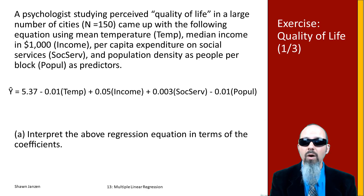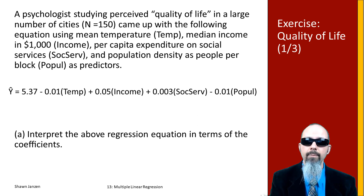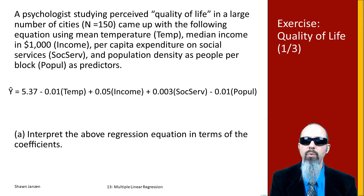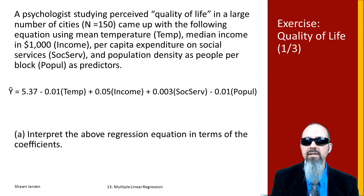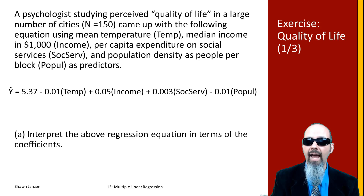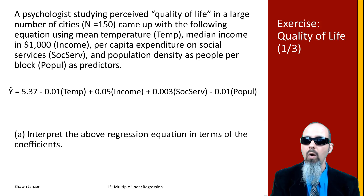Okay, let's work through these together so you can check your work. Our temperature variable has a coefficient of negative 0.01, so we can interpret that as: for each additional degree of temperature, we would expect to see an average decrease in quality of life of 0.01, holding all other variables constant.